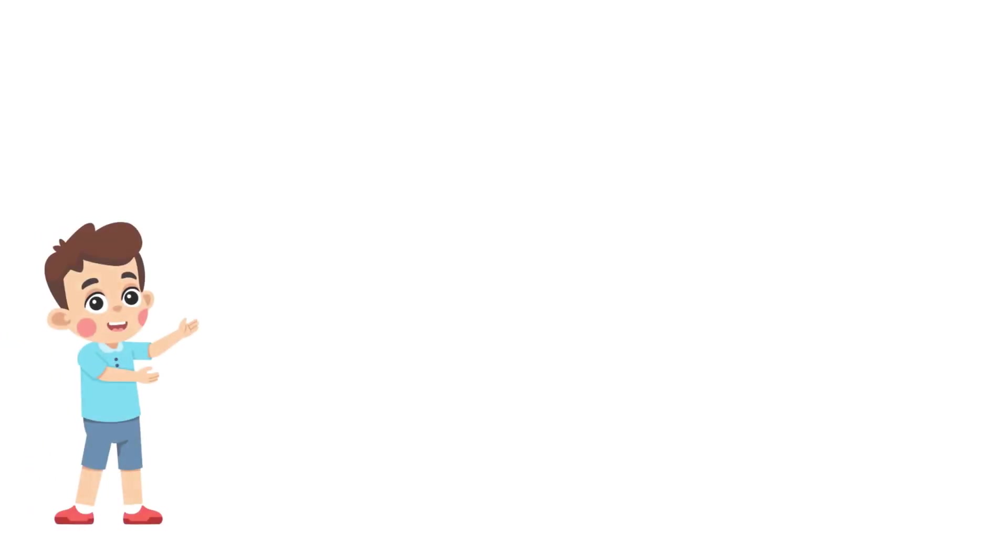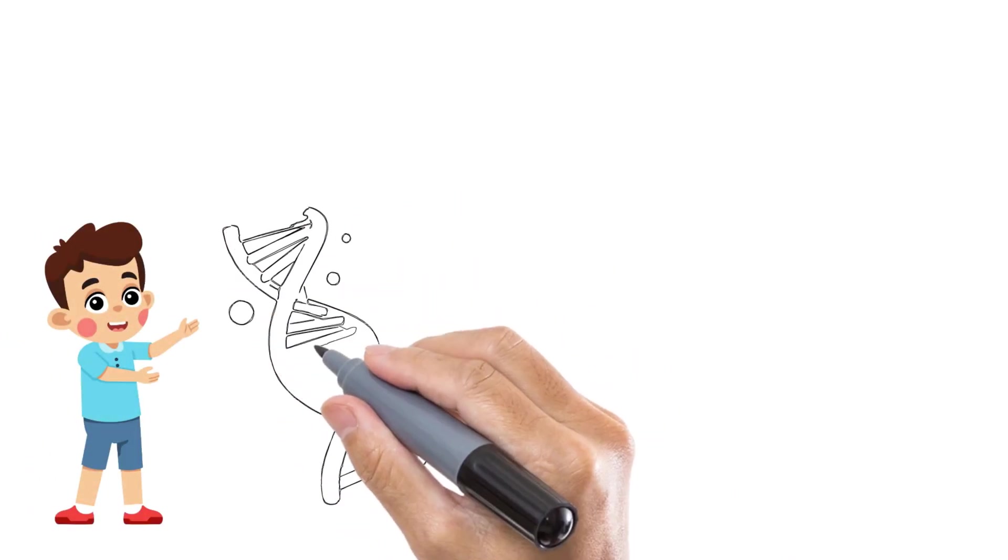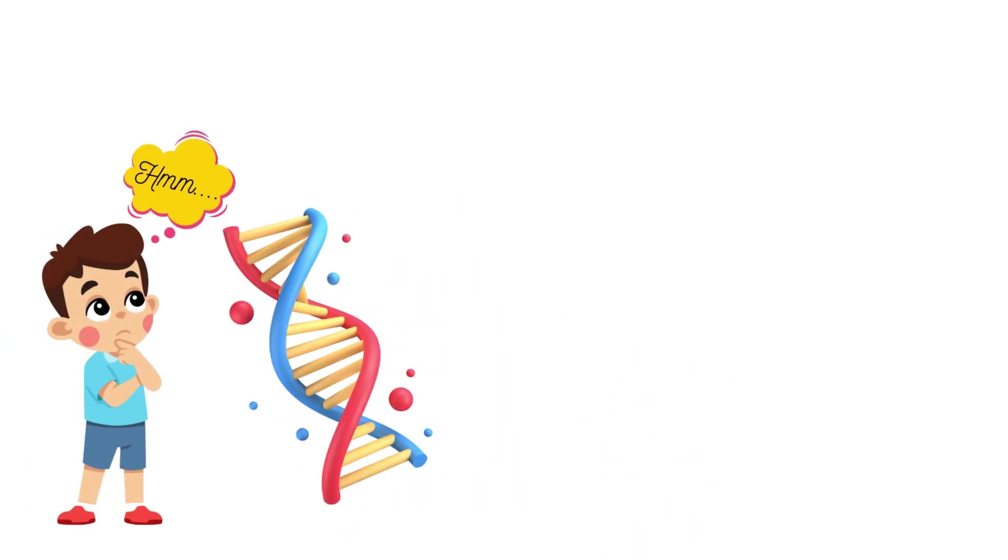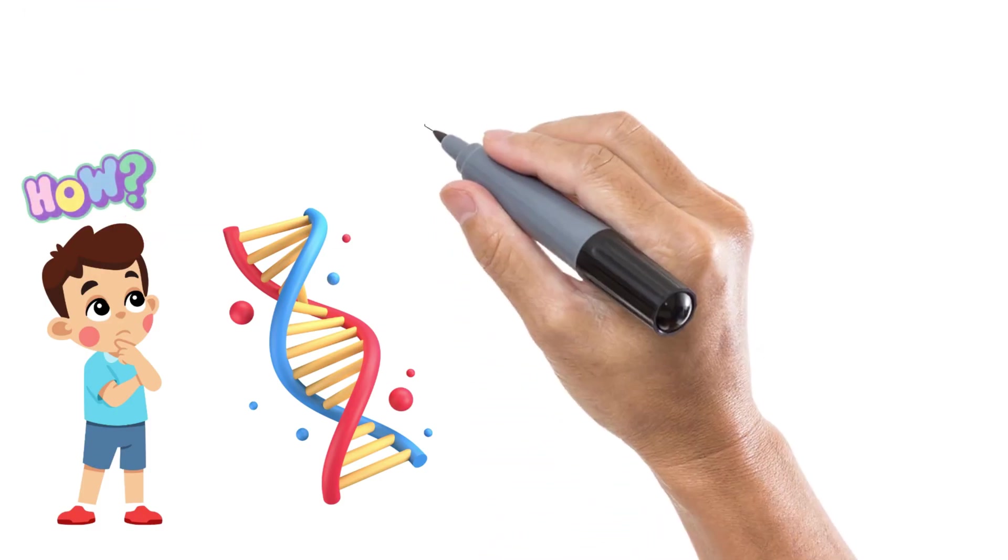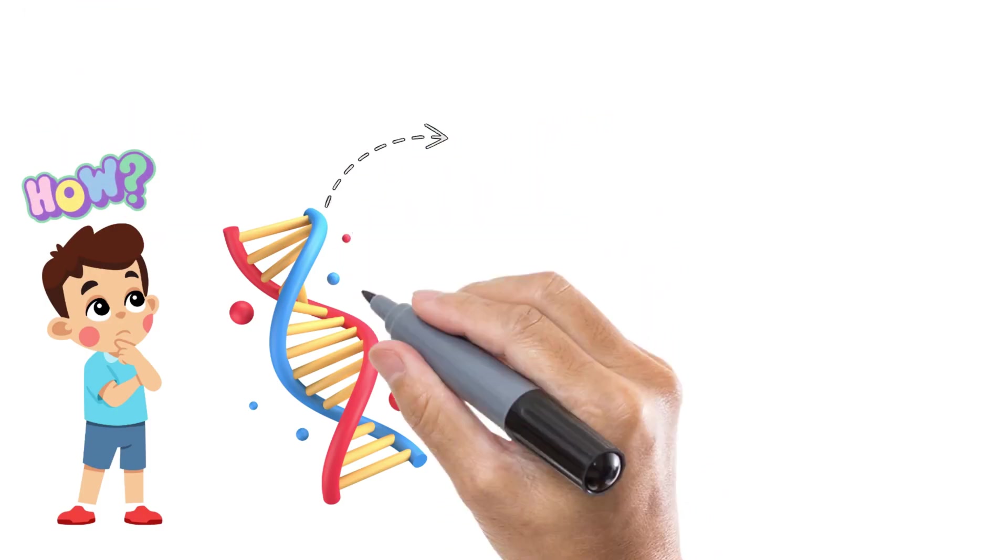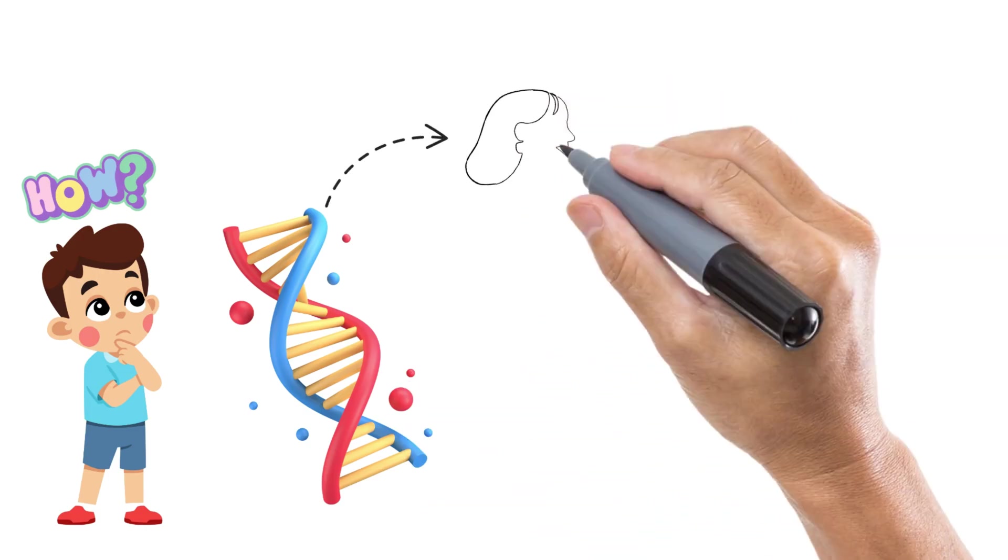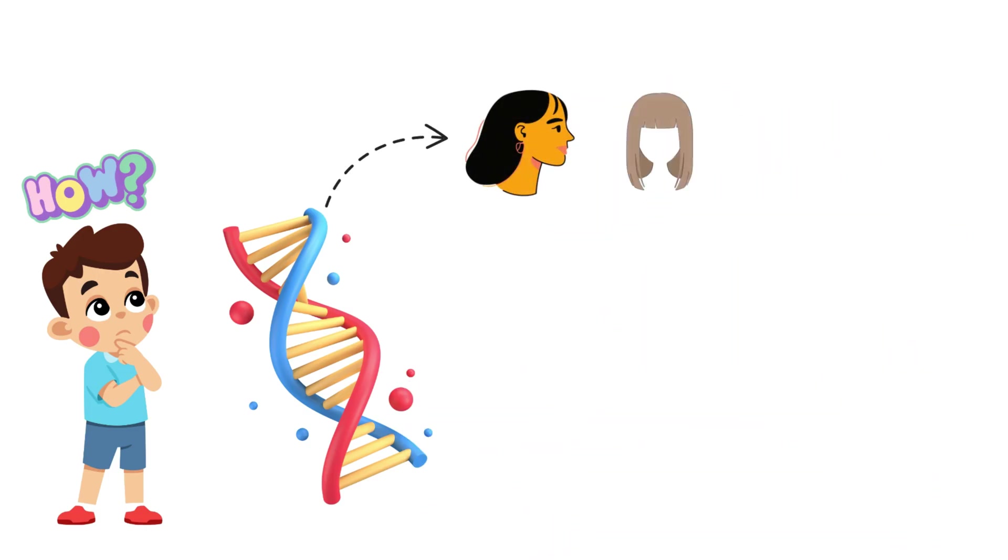Have you ever wondered why scientists keep saying DNA is the code of life? It sounds fascinating but also mysterious. How can something so small, a thin thread-like structure, decide your skin tone, your hair color, even how tall you might grow? The secret lies in two powerful processes: transcription and translation.